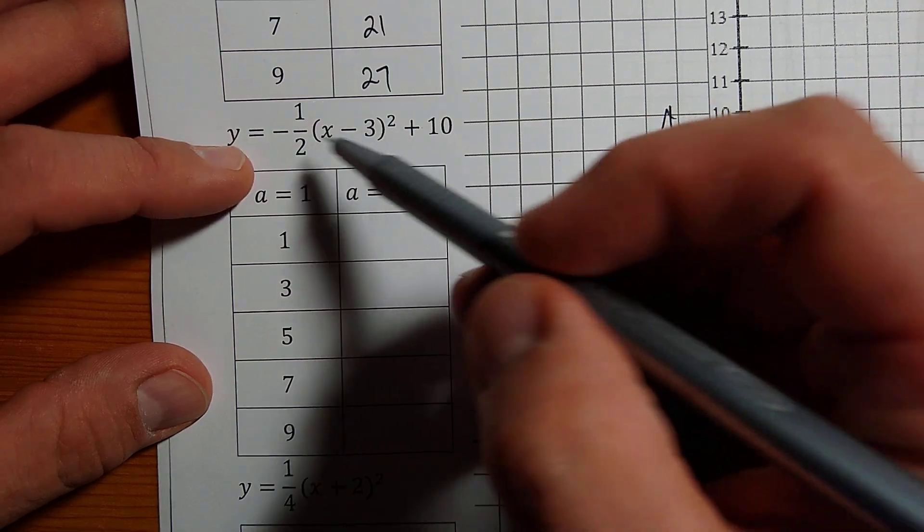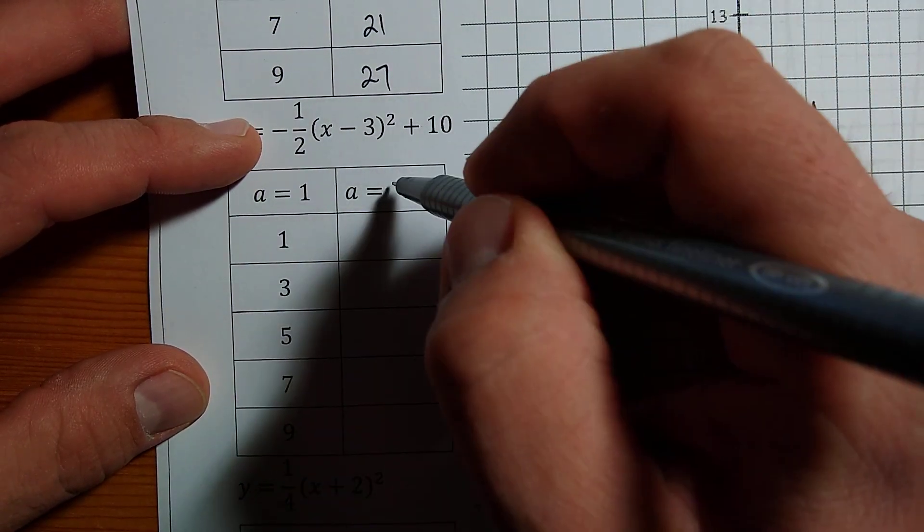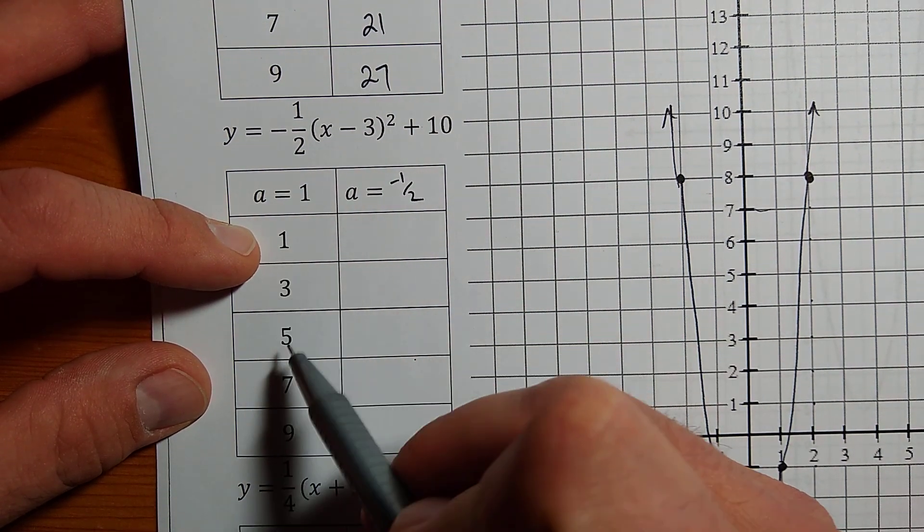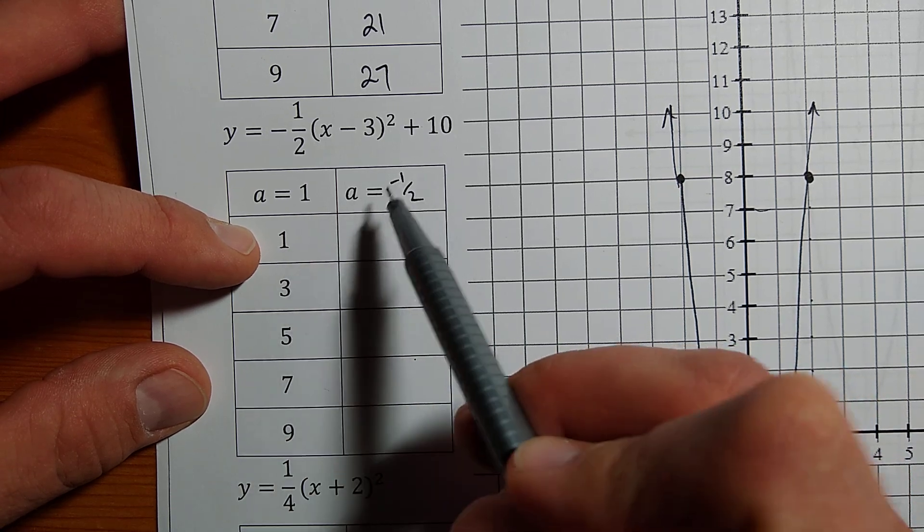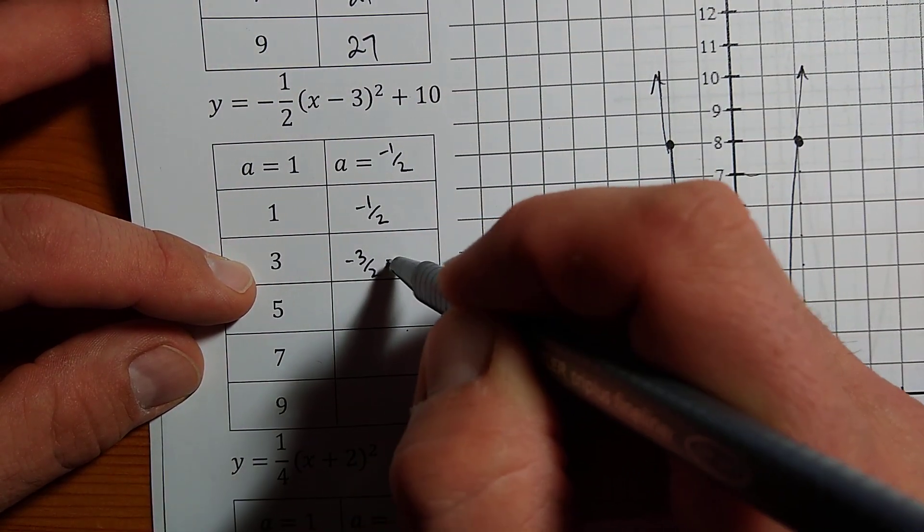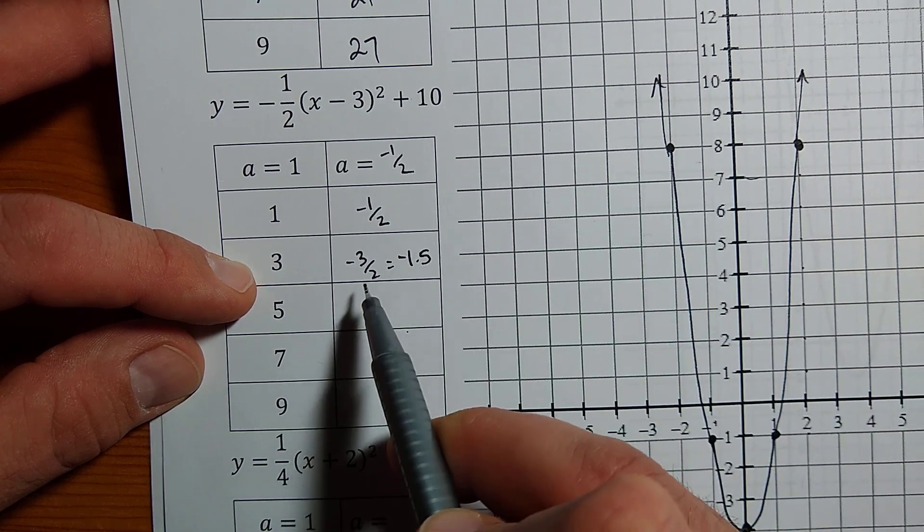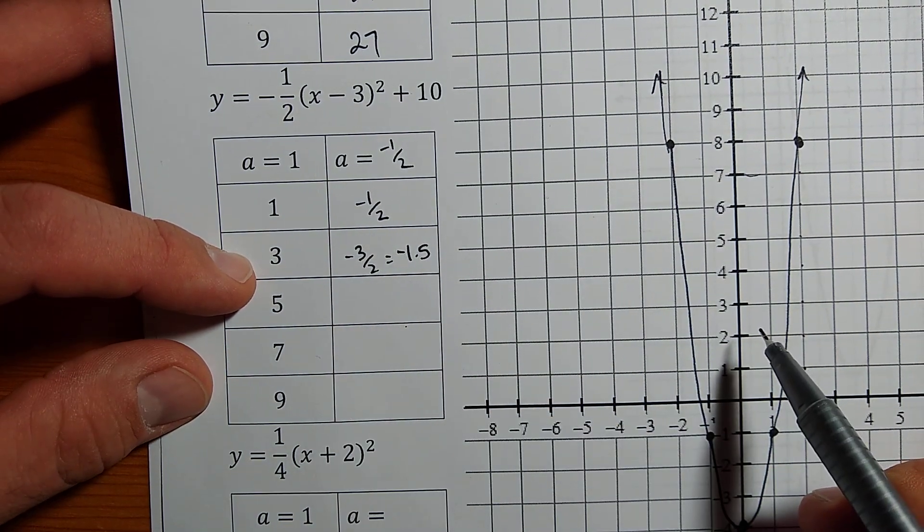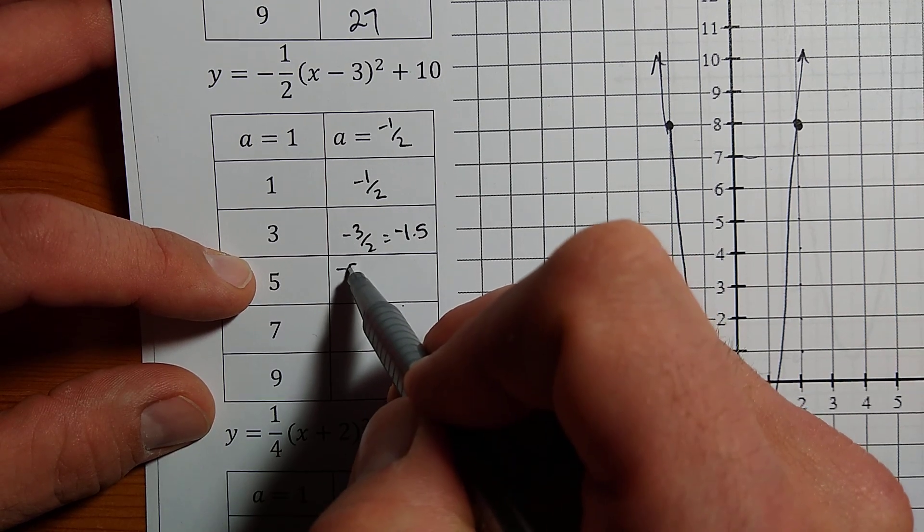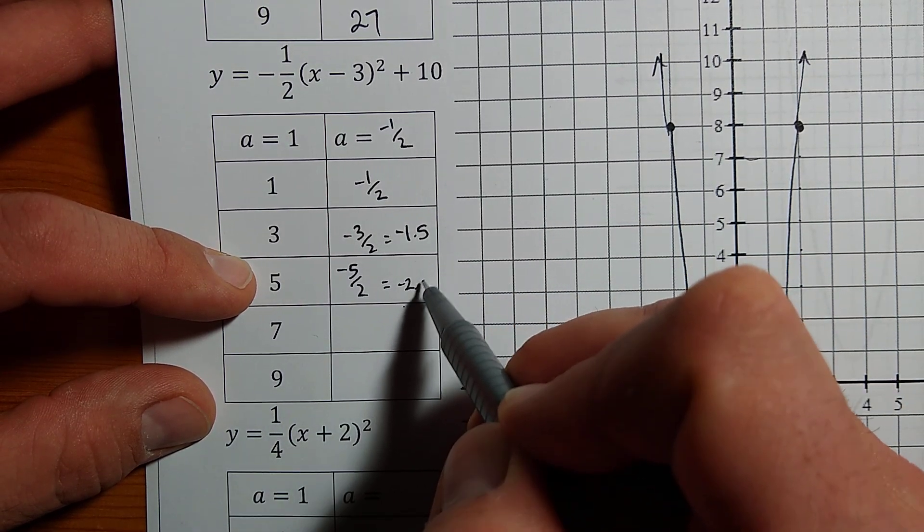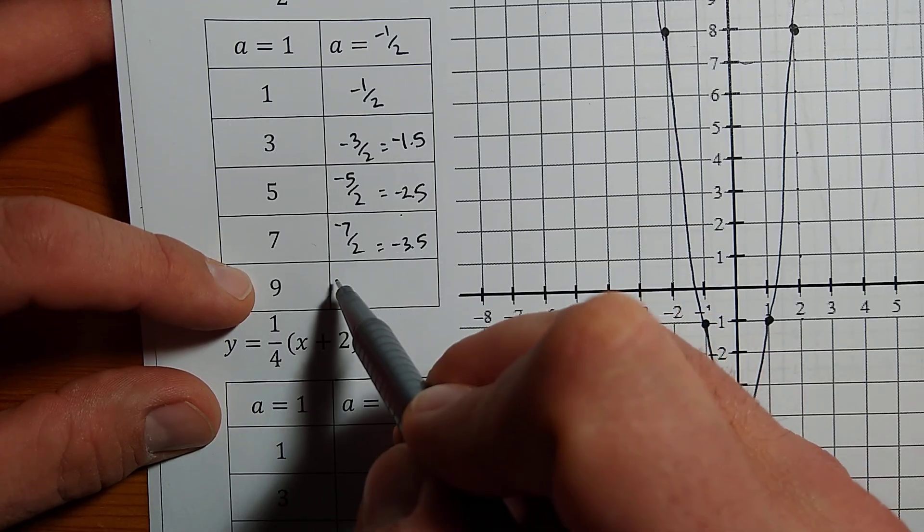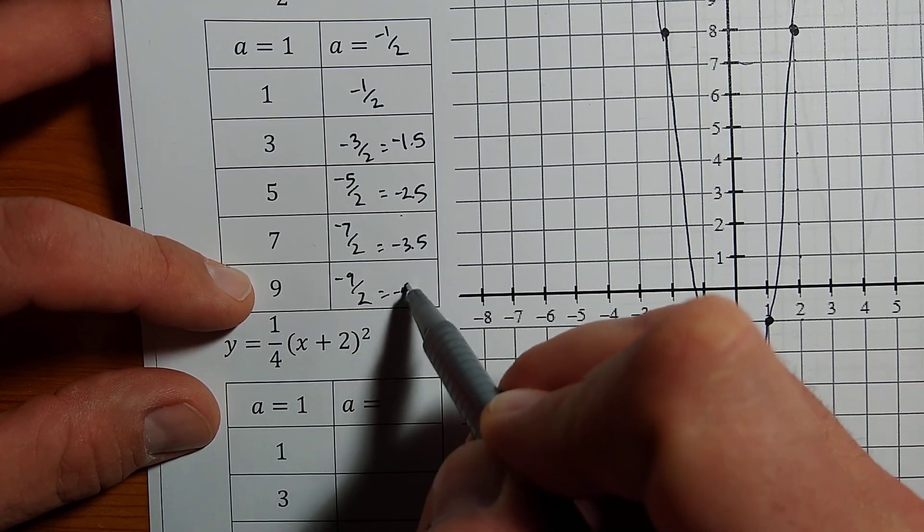Okay, let's look at one more here. This one's a fraction. In this case, we have that a is negative 1 half. So we multiply everything by the new a value. The step pattern was 1, 3, 5, 7, 9. And now it is 1 times negative 1 half. 3 times negative 1 half, that's negative 3 halves. And a lot of you will want to write negative 1.5. 3 halves, because it's an improper fraction, can be difficult to find on a graph. Turning it into a mixed number or a decimal value makes it a little bit easier to find. This is negative 5 halves, which is negative 2.5. Negative 7 halves, negative 3.5. And negative 9 halves, which is negative 4.5.